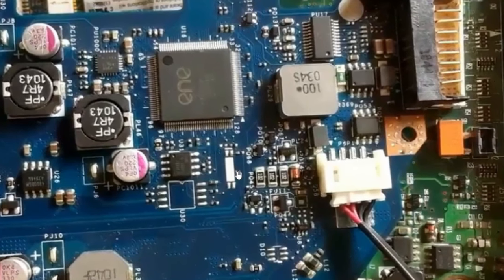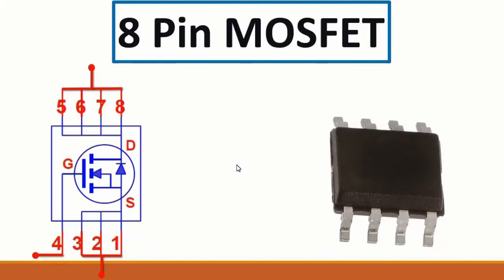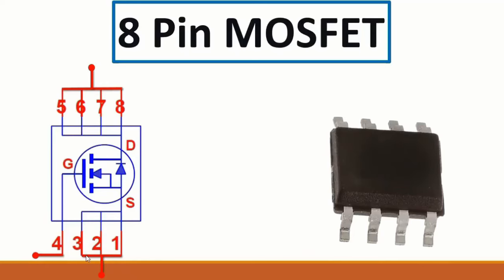Next we have the 8-pin MOSFET with eight terminals. The first three terminals are for source, the fourth is gate, and the remaining four are for drain. So: four terminals for drain, three for source, and one for gate.